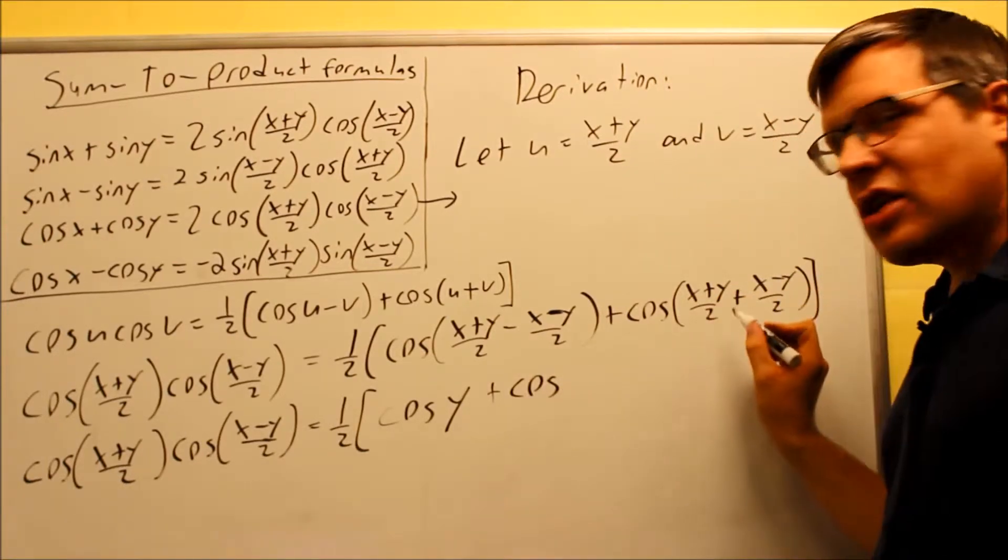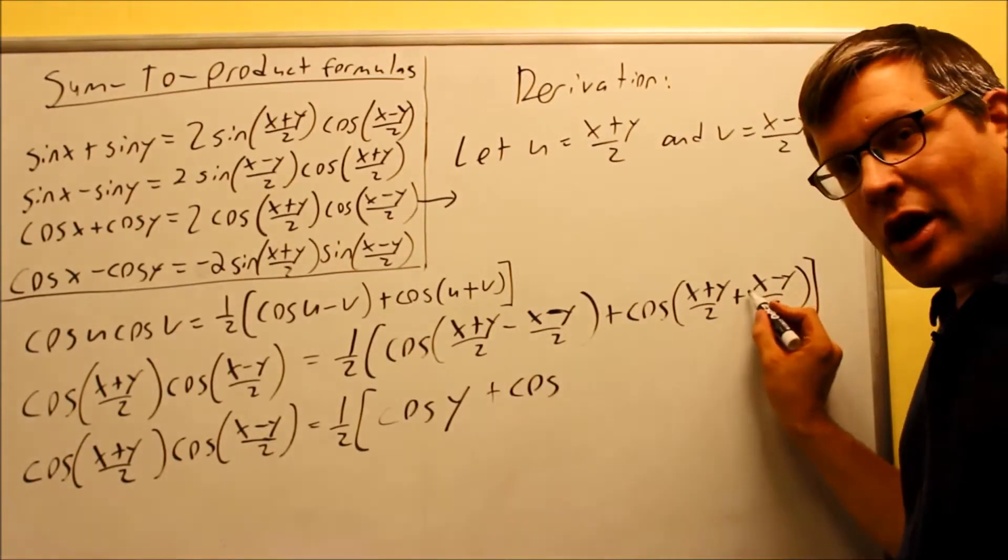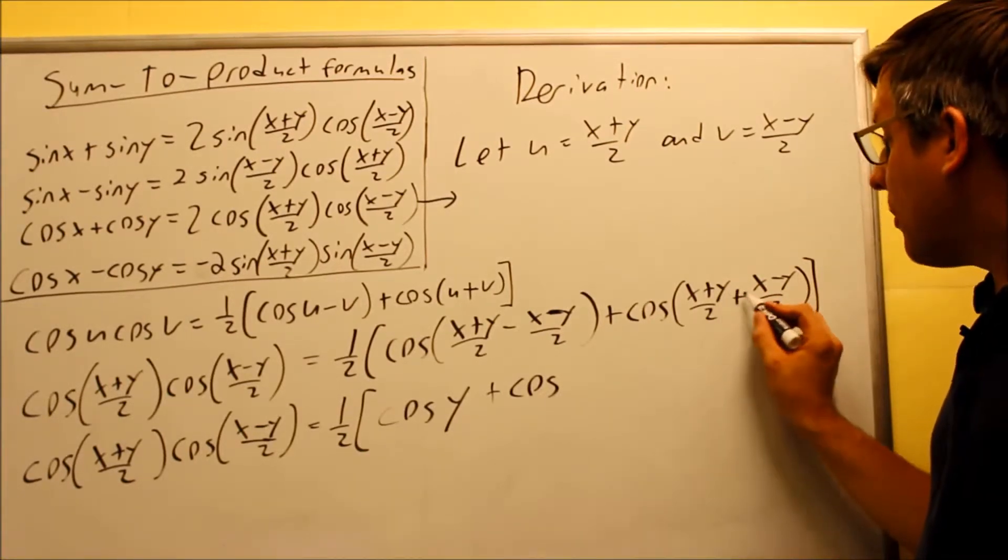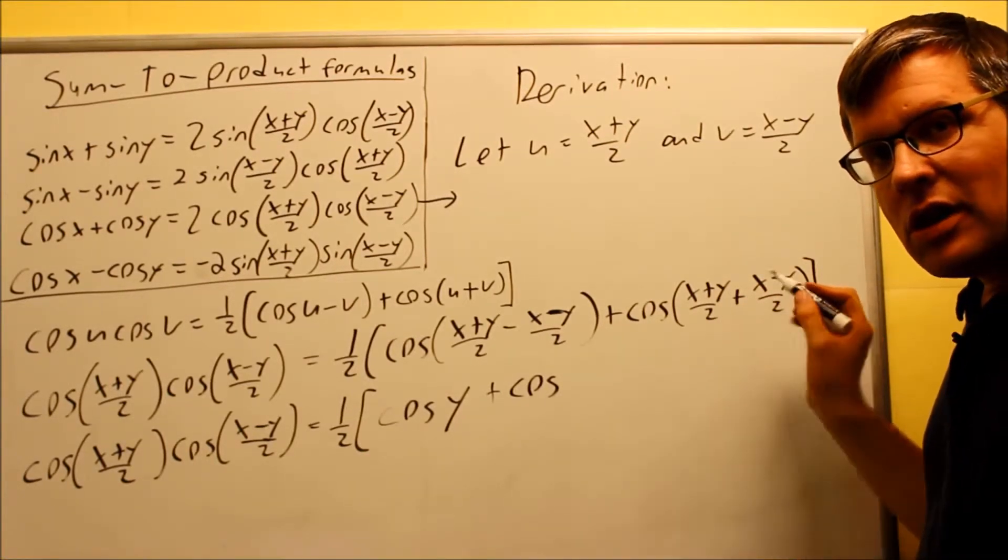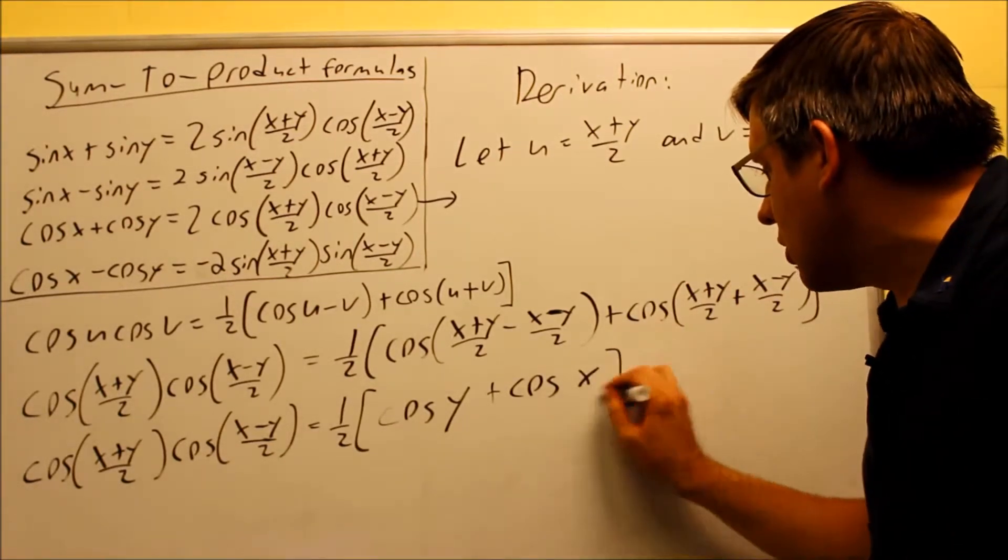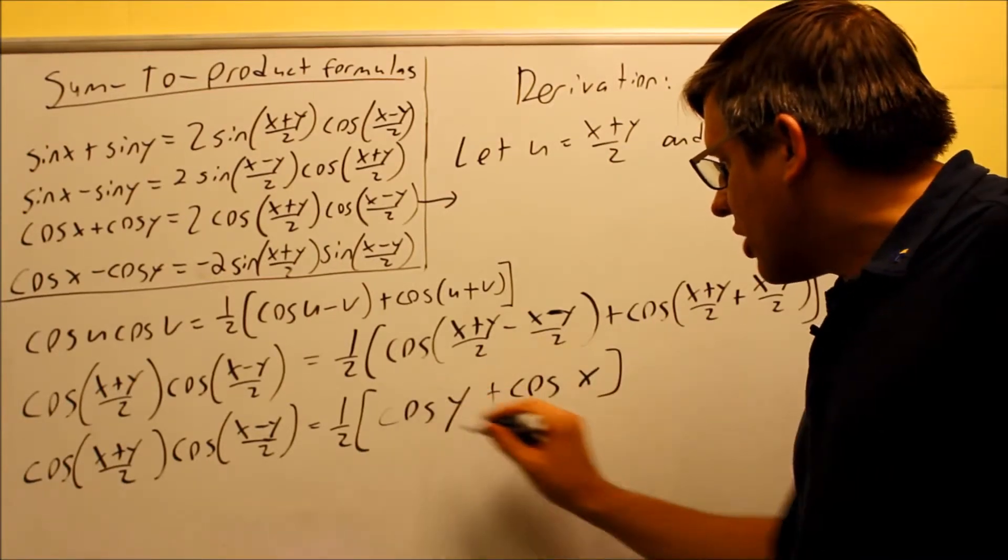Over here, I get cosine, let's take a look here. I get x and x, that's 2x. The y is going to cancel with the negative y here, because I'm adding this time, y plus the negative y, that's 0. I get 2x over 2, that cancels out and gives me just cosine x.